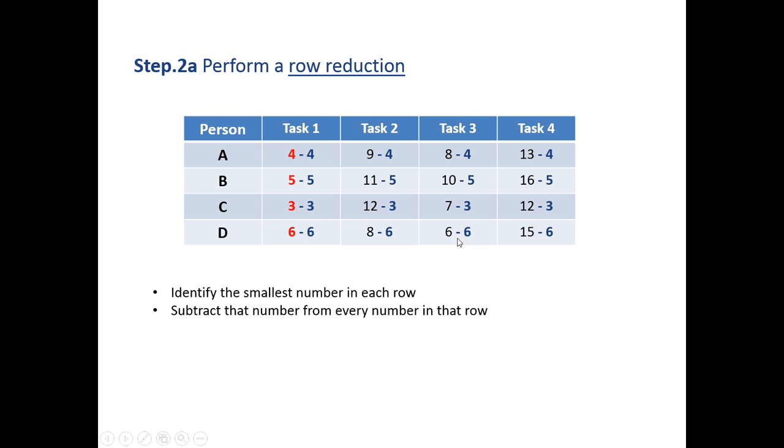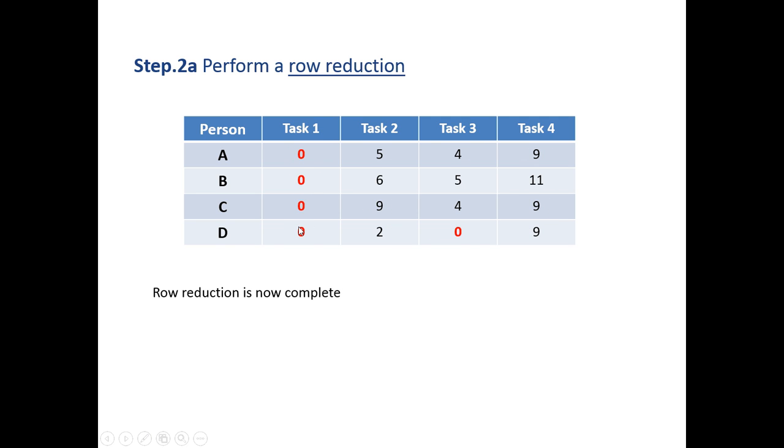We then subtract that number from the rest of the numbers in that row. For everything in row 1 we subtract 4 because that's the smallest number. Every element in the second row we subtract 5, every element in the third row we subtract 3, and every element in the fourth row we subtract 6.